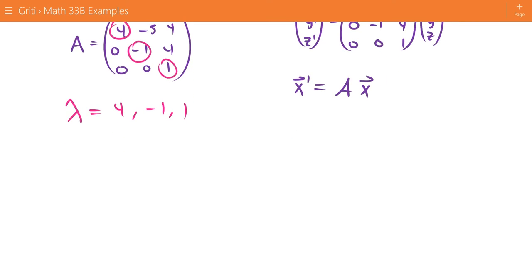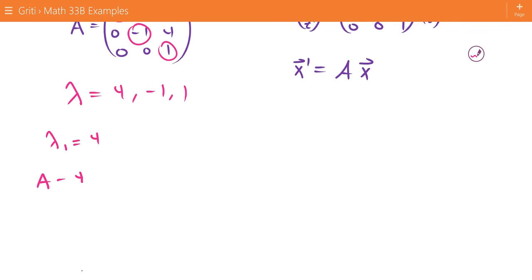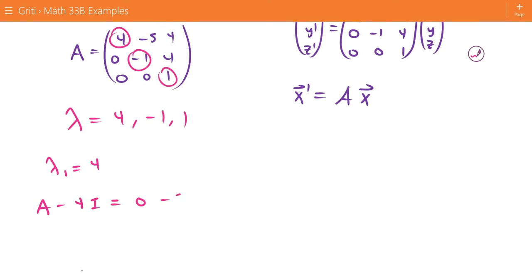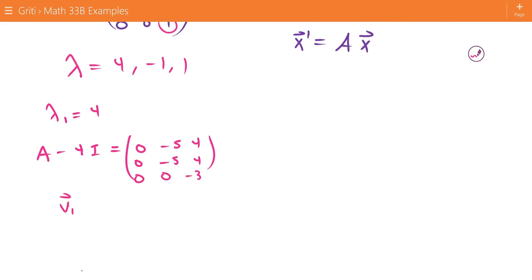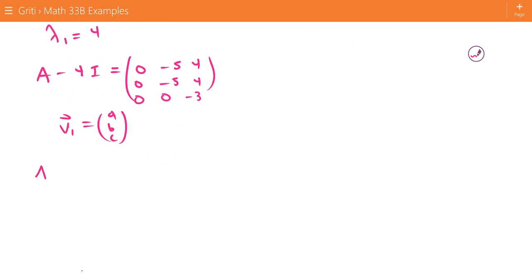And now, for each of these distinct real eigenvalues, we know that we're going to get a distinct eigenvector. So what we do is we look at lambda 1, which we'll say is positive 4. Then we look at A minus 4I. That's going to be 0, negative 5, 4, 0, negative 5, 4, and 0, 0, negative 3. And we want to find V1, which we'll say is equal to components A, B, C,